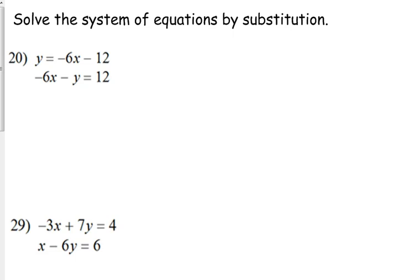Substitution is the easiest method, but it's not always the most efficient. There are particular times when it is more efficient than others. For example, in number 20, whenever you have a system and one of the equations is solved for one of the variables, that's when substitution is great.